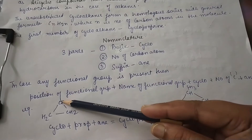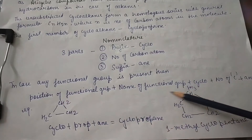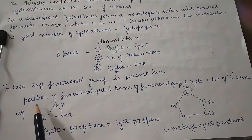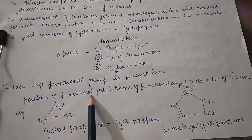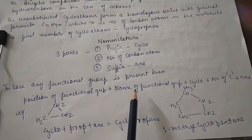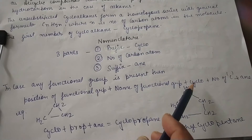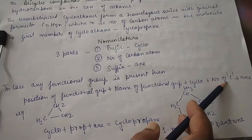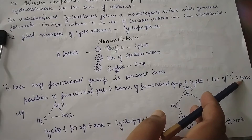In case any functional group is present, the format to write the name of the compound is: first, write the position of the functional group, then name of the functional group, then 'cyclo' as prefix, then the number of carbon atoms, and lastly 'ane'.